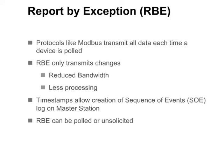More advanced protocols support report by exception, or RBE. Instead of reporting all data in the device, RBE only transmits changes or events of interest. This can result in reduced bandwidth and less processing, because only changed points are transmitted, resulting in fewer points being sent. Attaching timestamps to RBE data allows the master station to recreate the sequence of events that occurred in the outstation.